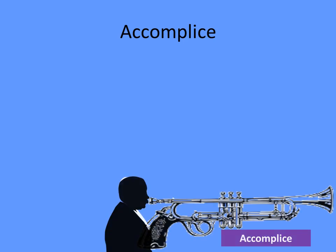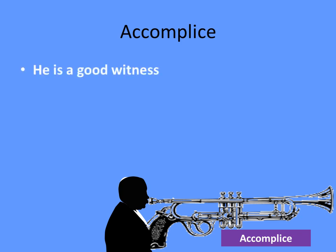There is another interesting type of witness known as an accomplice. An accomplice is a person who is involved in the crime — he is part of the crime — but later decides to assist the police in the investigation and assist the court in determining punishment. He is basically a mole in the gang who is assisting the court, and such a person is known as an accomplice. He can be a good witness.